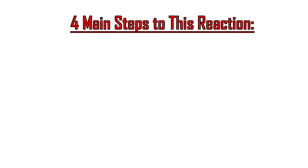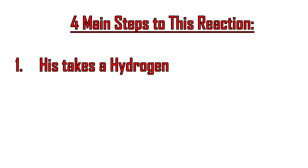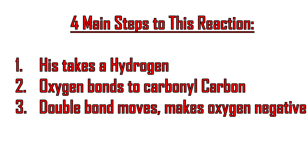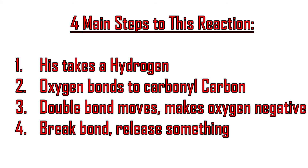Here are the four main steps to set up our reaction. Number one, histidine takes a hydrogen. Number two, oxygen reacts with a carbon. Number three, a double bond moves and makes oxygen negative. Number four, we break a bond and we have the release of something.